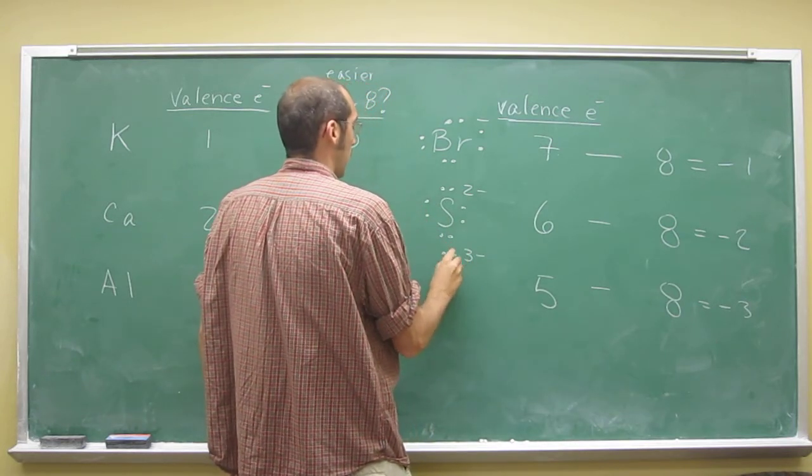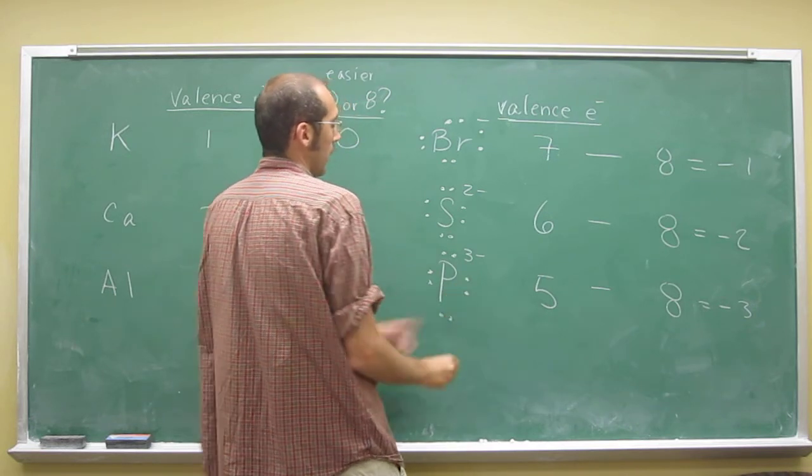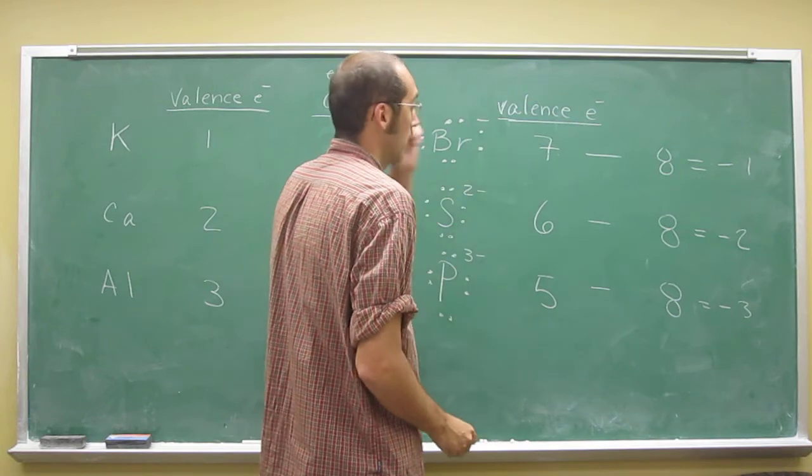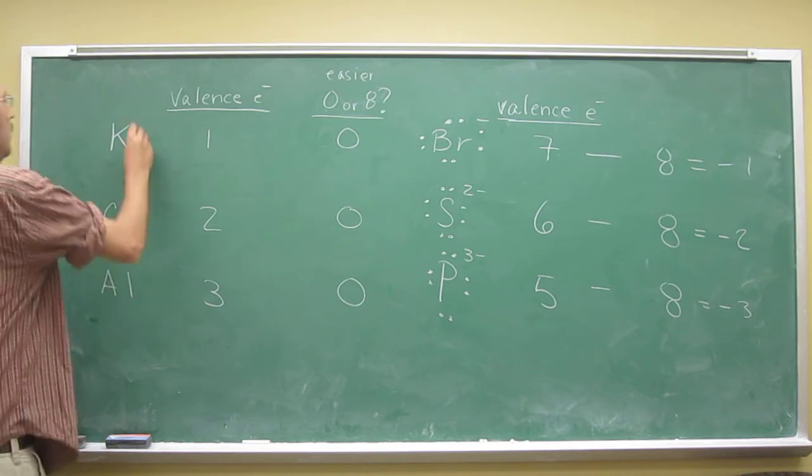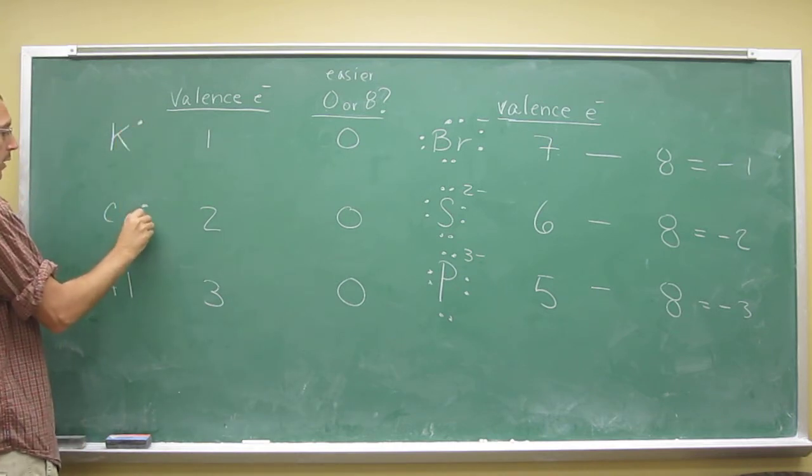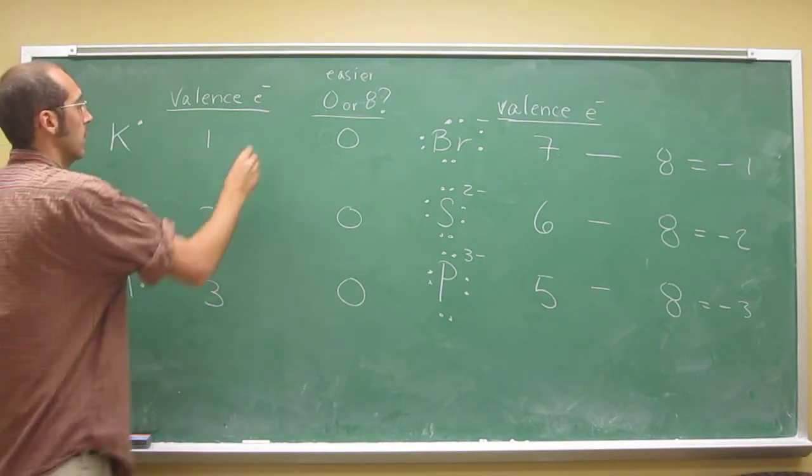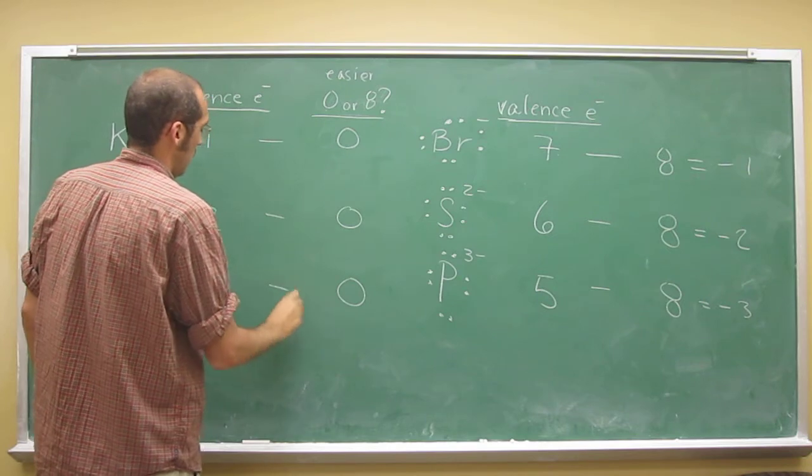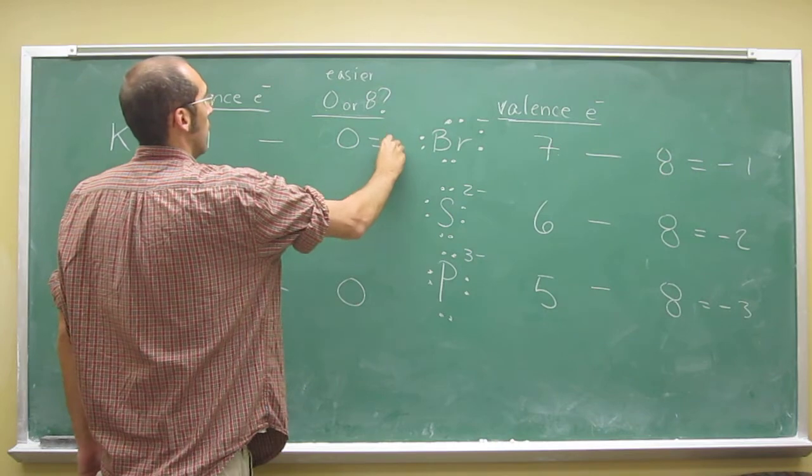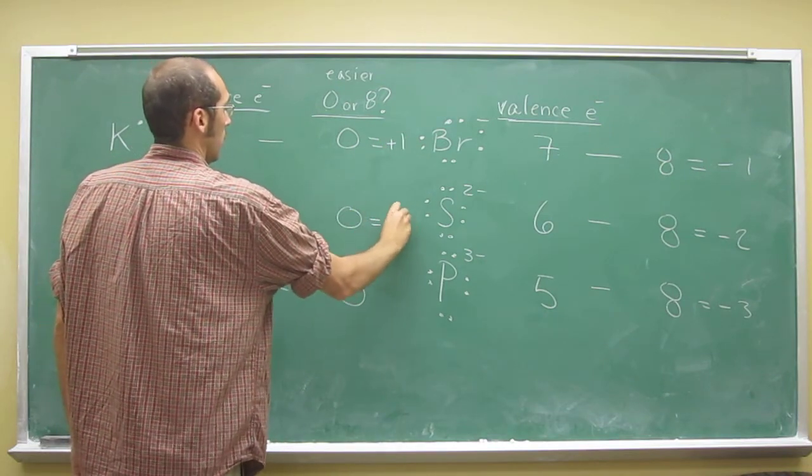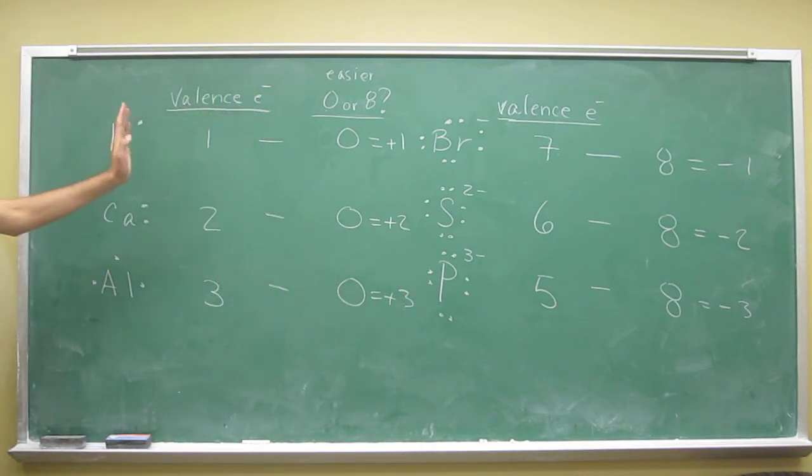So three minus. And remember, in chemistry, it's conventional to write these backwards as three minus, two minus. Well, you don't have one. Okay, so here, right? We had one electron, or two electrons, or three electrons, right? And we went to zero electrons. So one minus zero, that's going to be plus one, plus two, plus three, right? Because we're going to lose those electrons.